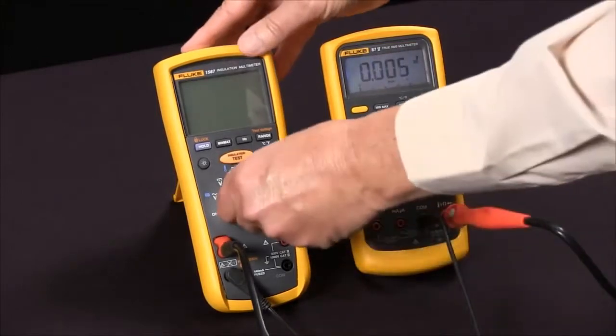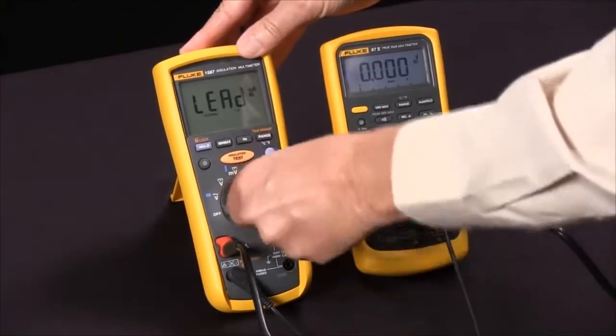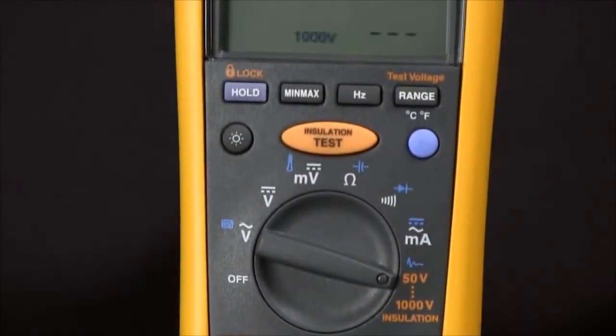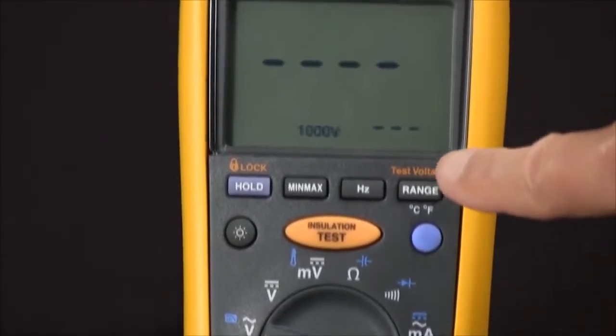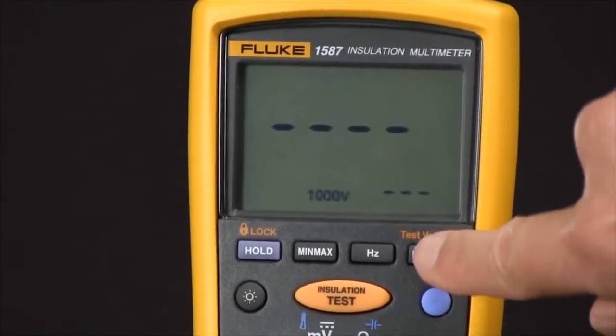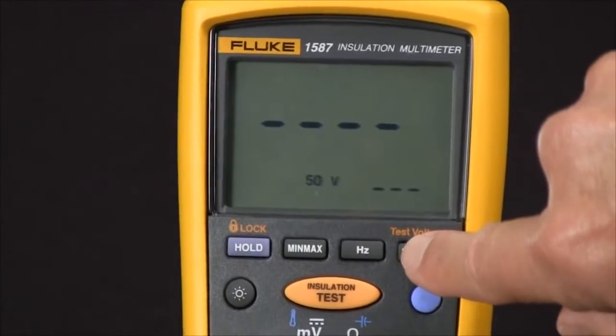And then we will rotate our selector knob to the orange insulation test voltages, and at this point we can select a test voltage by pushing the test voltage button.